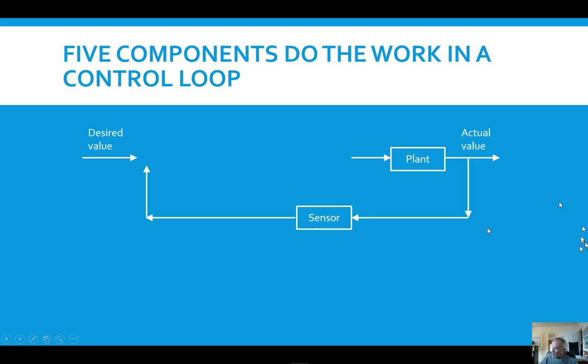So we're sensing the speed of the car or the temperature of a boiler in an industrial plant or something like that. The thing whose variable we're sensing is the plant in the control loop and that's the thing that we're actually controlling.